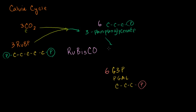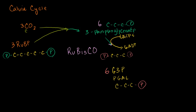Each of those 6 three-phosphoglycerates gets a phosphate from ATP — so 6 ATPs come in and become 6 ADPs, giving away their phosphate groups. One phosphate goes to each of the 6 three-phosphoglycerates, and you end up with a 3-carbon compound with 2 phosphates: 1,3-biphosphoglycerate. This means there's a phosphate on the 1-carbon and the 3-carbon, so it's biphosphoglycerate — and we have 6 of them.